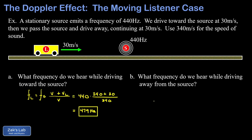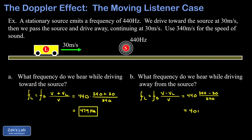For part B, we want the frequency heard while driving away from the source. This just requires putting the minus sign into the formula instead of the plus sign, because now we expect the listener to hear a lower frequency. Substituting: 440 times (340 minus 30) divided by 340, with a speed of sound of 340 and listener speed of 30 meters per second, gives us 401Hz.